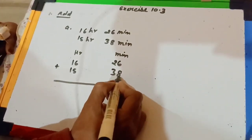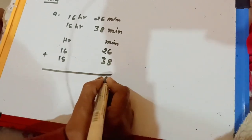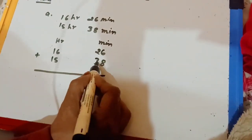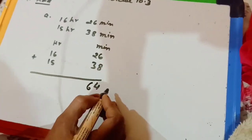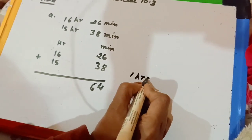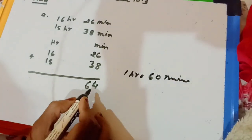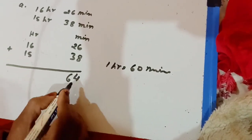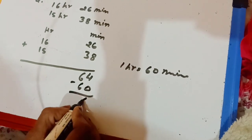6 and 8 is 14, for 14 we write 4. 1 carry, 2 and 3 is 5, 5 and 1 is 6. Children, look carefully. As you know, 1 hour is equal to 60 minutes. So we take out 1 hour from this minute total. We minus 60 minutes and we get 4 minutes.